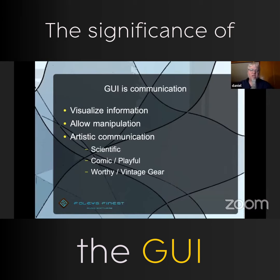It allows us to change all the values in our code. Basically, the main manipulation — if you don't have a hardware controller — you might want to have a very scientific look if you want to stand for precision and numerical preciseness.